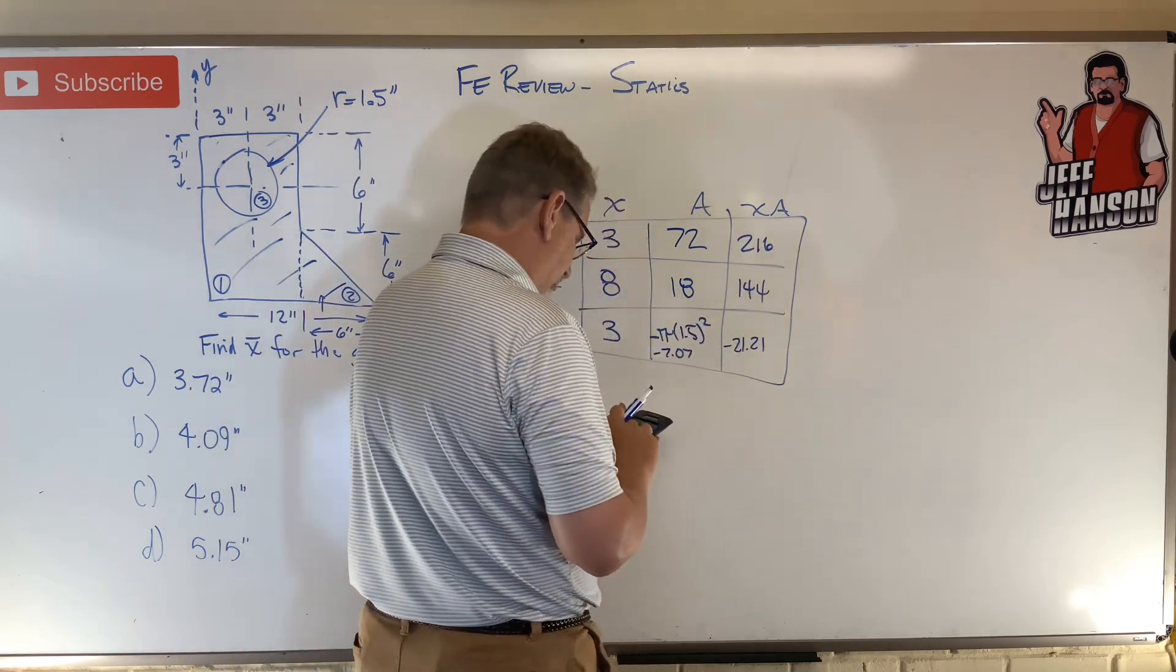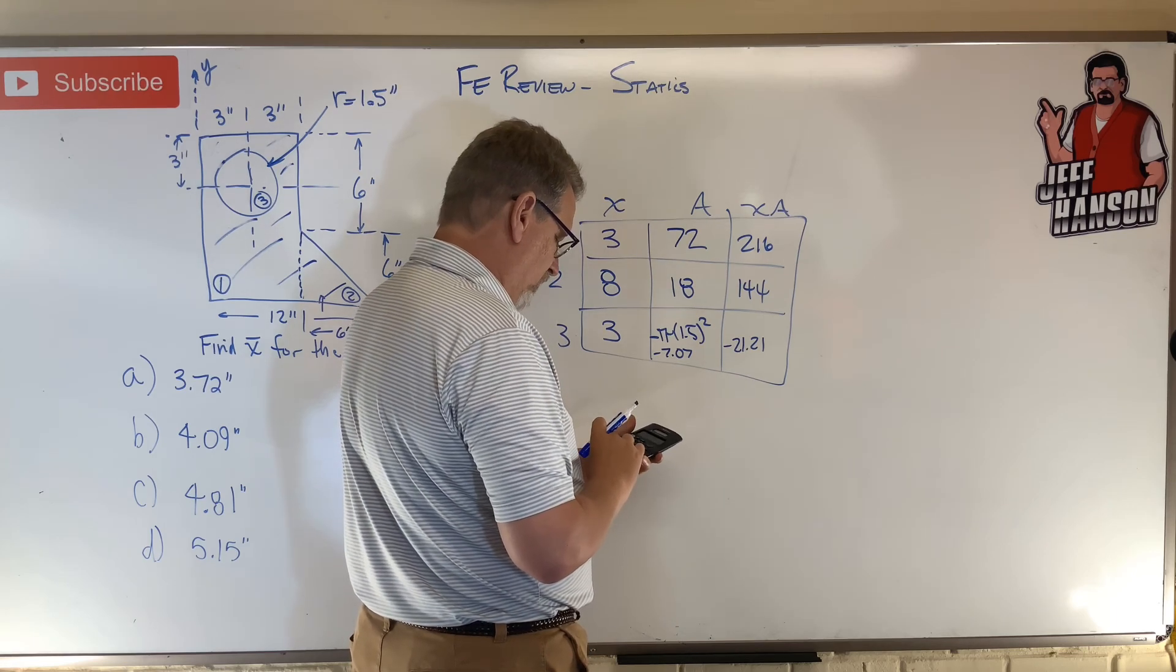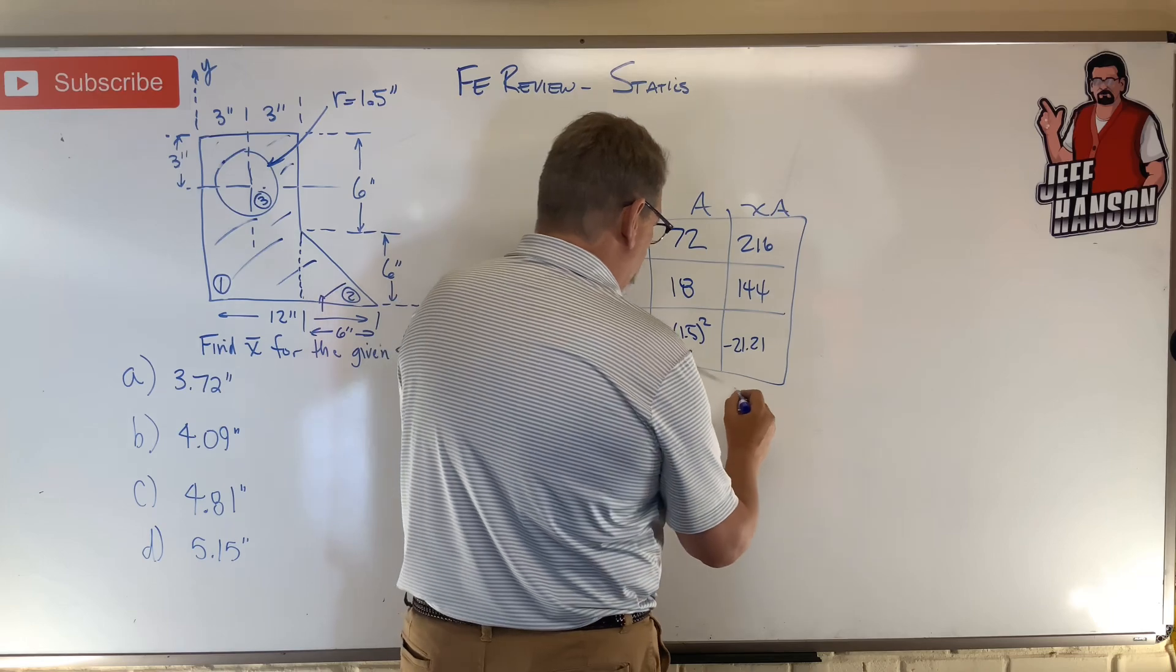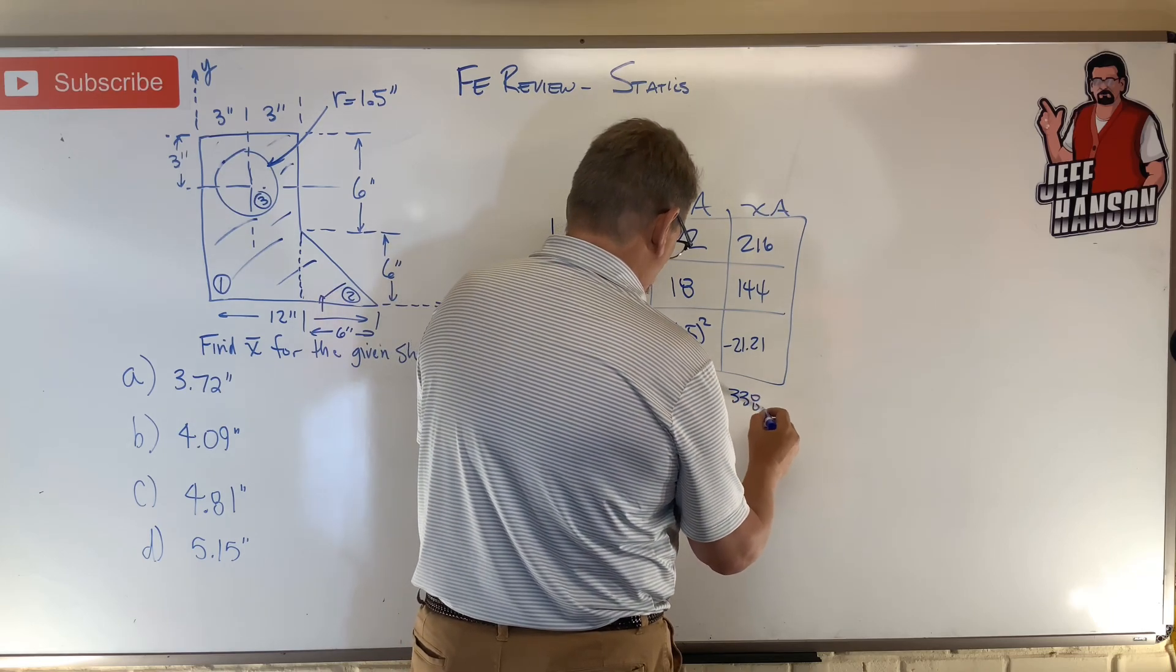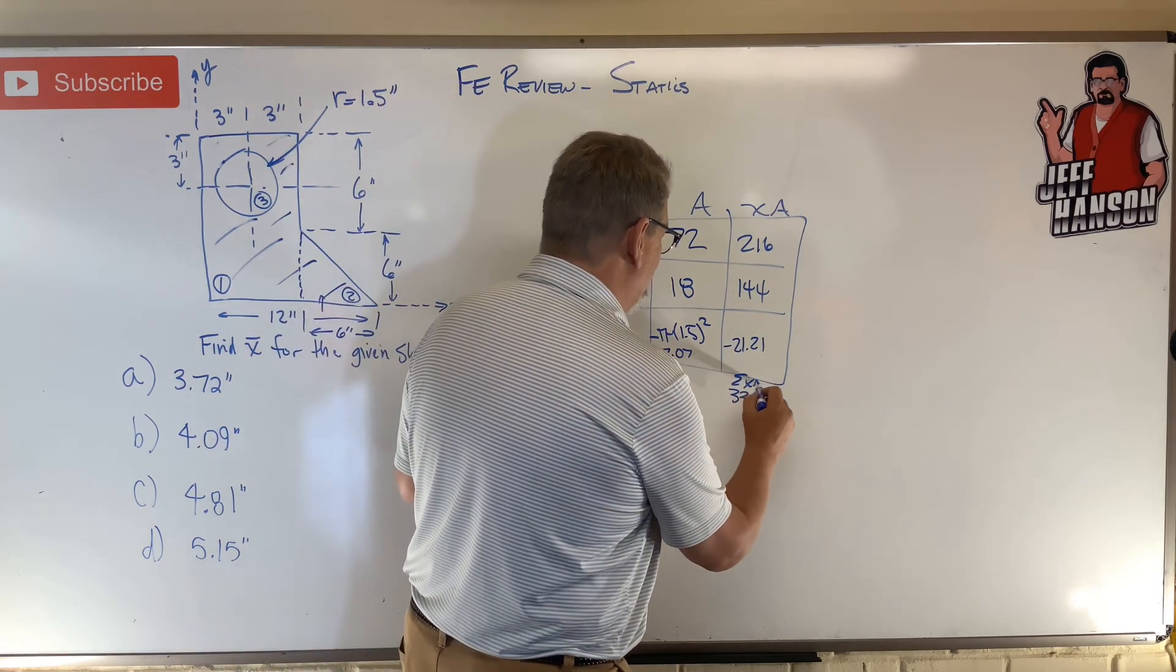216 plus 144 minus 21.21 equals 338.79. What does this column equal, right? Because this is the sum of the x a's.